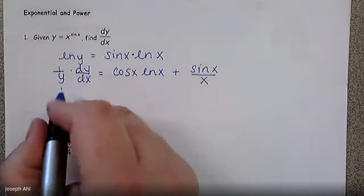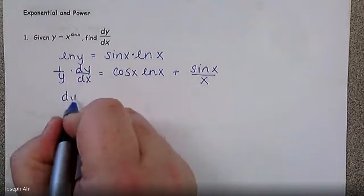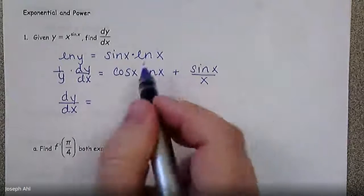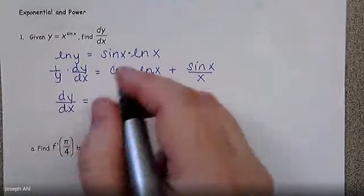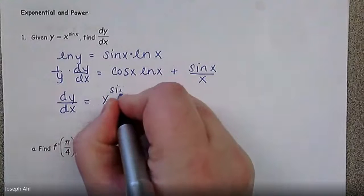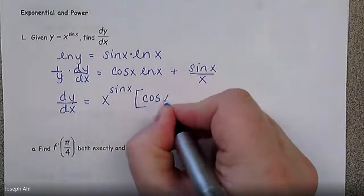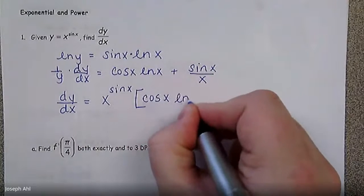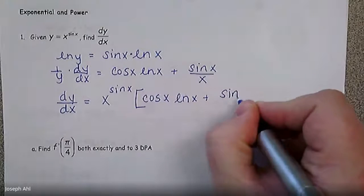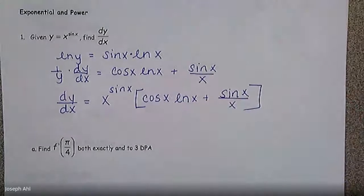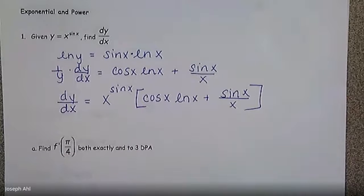Last but not least, when we multiply y to the other side, dy/dx equals y times this quantity, where y is really x to the sine x power. So I'll replace that at this stage, and we have: x to the sine x times cos x ln x plus sine x over x.